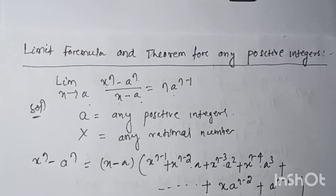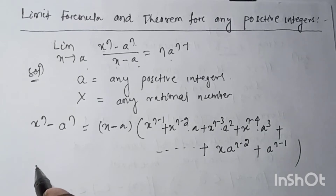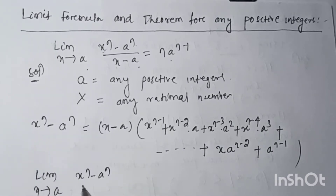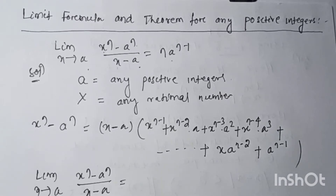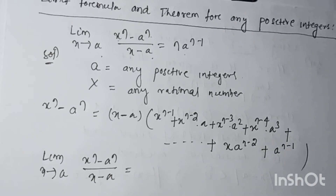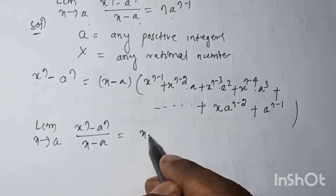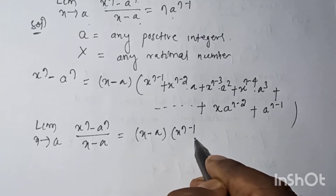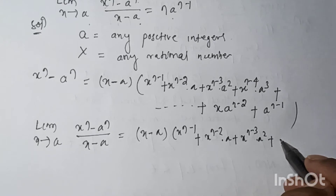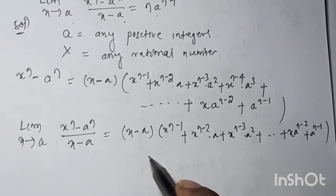We know that a^(n-1) is the last term. So the limit as x tends to a of (x^n - a^n) / (x - a) equals the limit of (x - a)(x^(n-1) + x^(n-2)·a + ... + a^(n-1)) divided by (x - a), which simplifies to the limit of (x^(n-1) + x^(n-2)·a + ... + a^(n-1)).